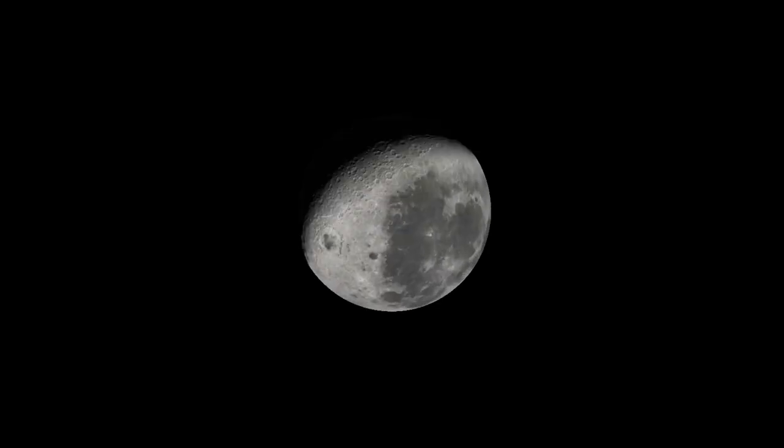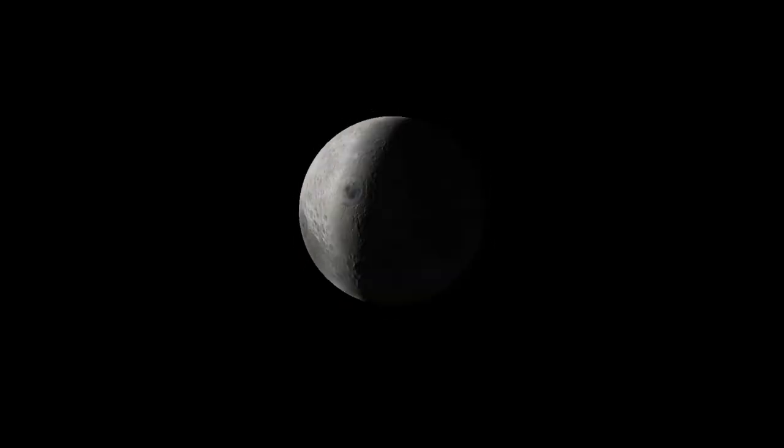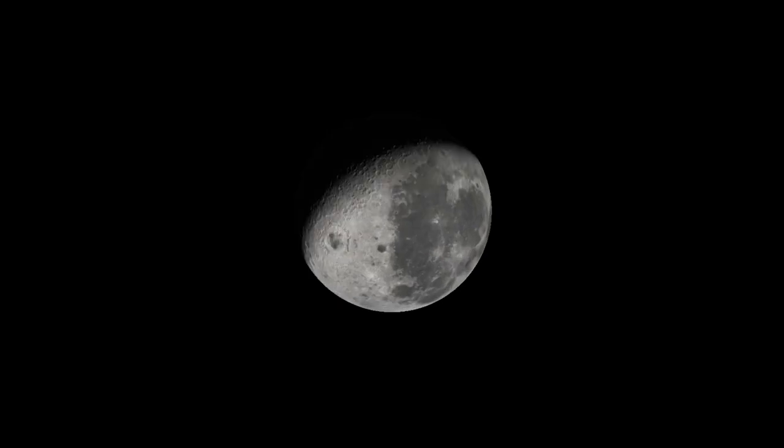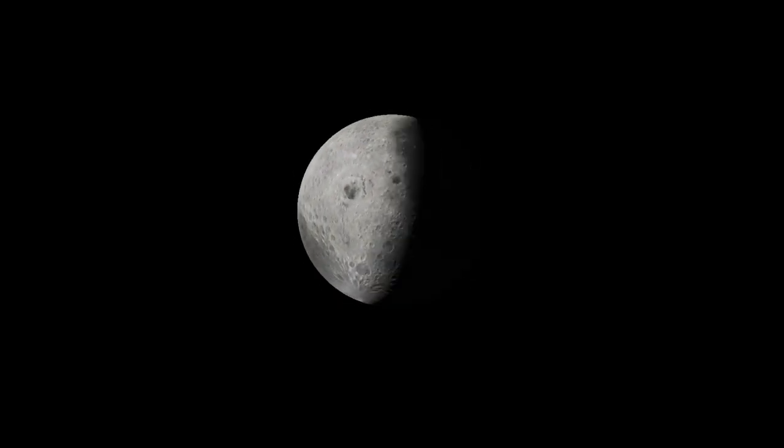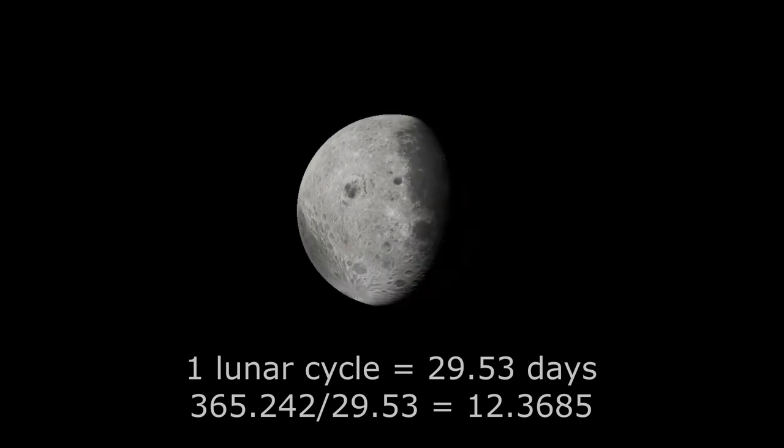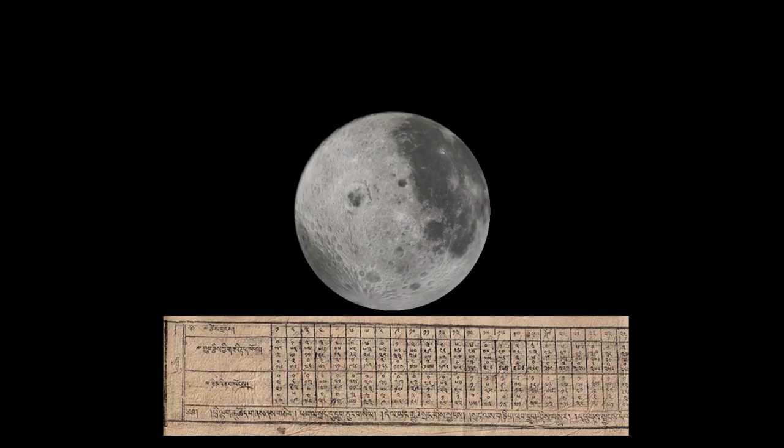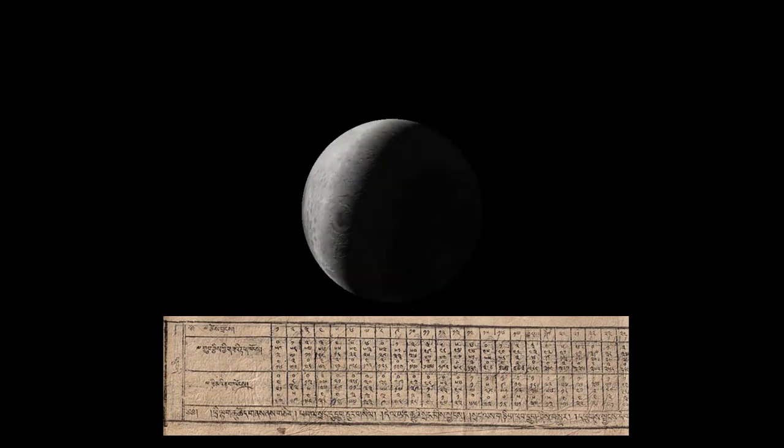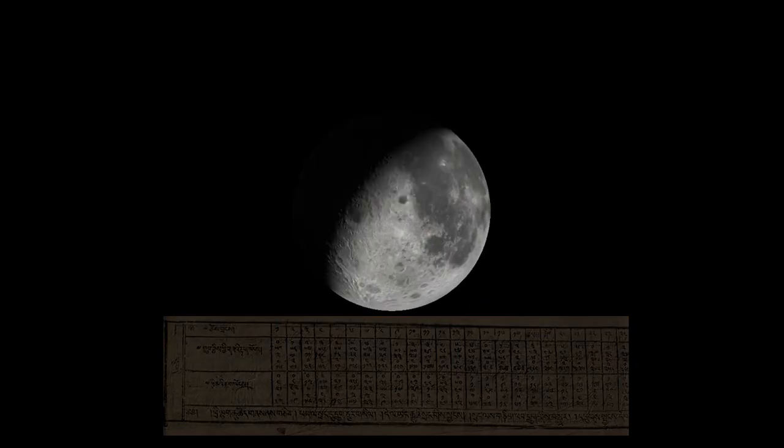The phases of the Moon provide a very useful visual marker of the passage of time over a relatively short interval, but an even number of Moon cycles doesn't match up with the number of days in a year. Although many cultures have used calendars based on the Moon, they require complex adjustments to keep them even loosely matched up with the solar year.